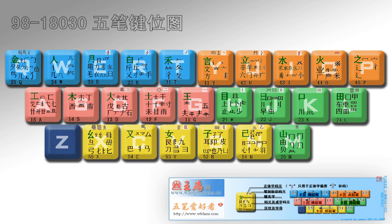Many implementations employ further multiple-word optimizations. Usually, a commonly used digraph (two-character word) in which both characters have short-form two-keystroke representations can be combined into a single four-keystroke representation which generates two characters rather than one. There are also a few three-character shortcuts, and even one rather longer, politically motivated one. Some examples of these are provided in the examples section.